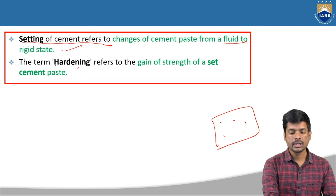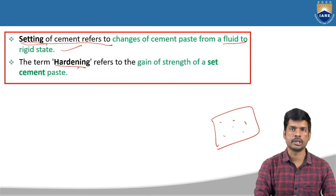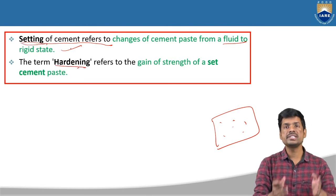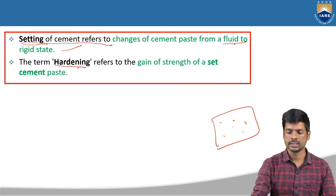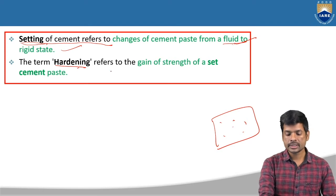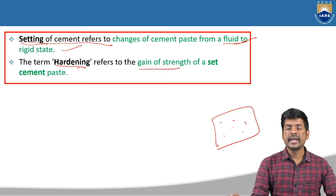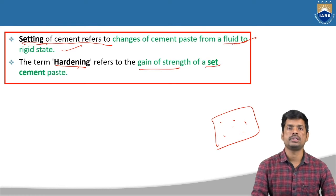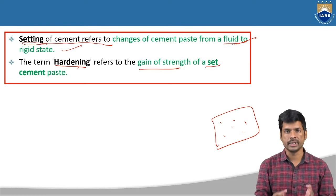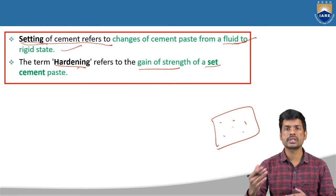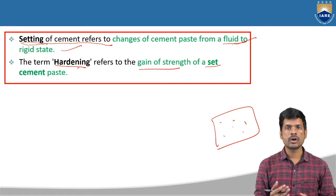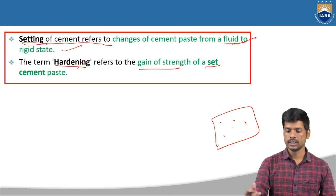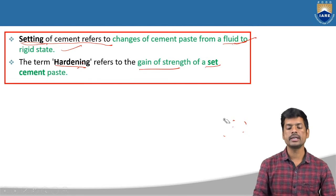Now the term hardening — hardening is different and setting is different. Setting is nothing but change of state from the plastic state to rigid or hardened state. But hardening refers to the gain of strength to a set cement paste. After setting of cement, it is going to gain some strength — the development of strength will be observed in the cement or concrete paste. That gaining of strength is called hardening. This is the difference between setting and hardening.